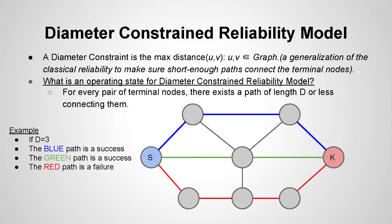Alright, I am going to go over the diameter constraint reliability model. So, a diameter constraint is the max distance that is basically allowed in the graph. It is a generalization of the classical reliability to make sure the short enough paths connect terminal nodes so you can't have connections in graphs greater than whatever the diameter constraint is. So you don't want to send a packet or information over 20 nodes, maybe have a cap at 10. I am going to go over first what is an operating state. For every pair of terminal nodes there exists a path of length d or less connecting them, kind of what I just went over.